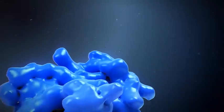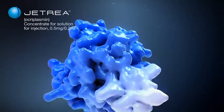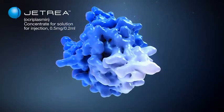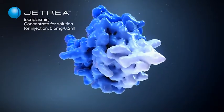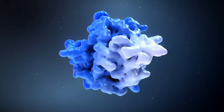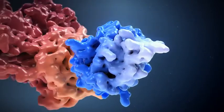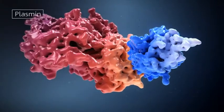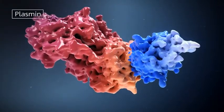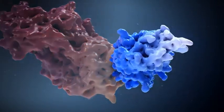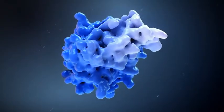Jetrea ocriplasmin intravitreal injection is the first and only FDA and EMA approved pharmacologic agent for the treatment of symptomatic VMA and its manifestations including vitreomacular traction and macular hole. It is a recombinant truncated form of human plasmin that has been formulated for intravitreal injection.